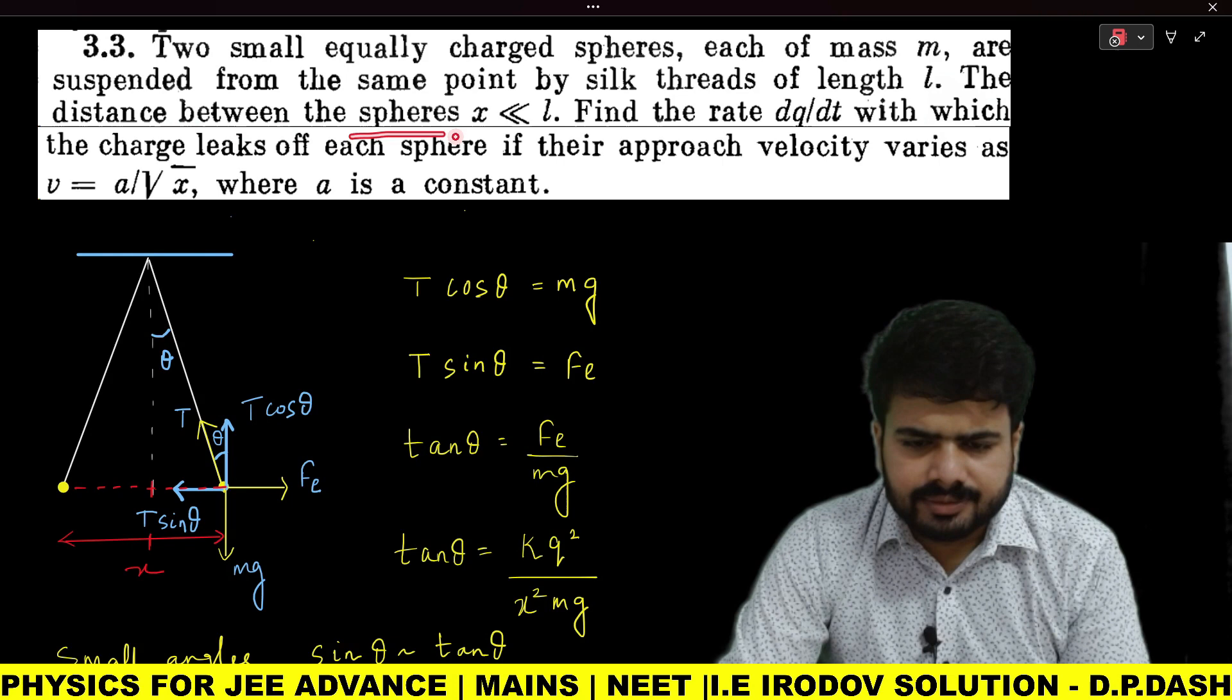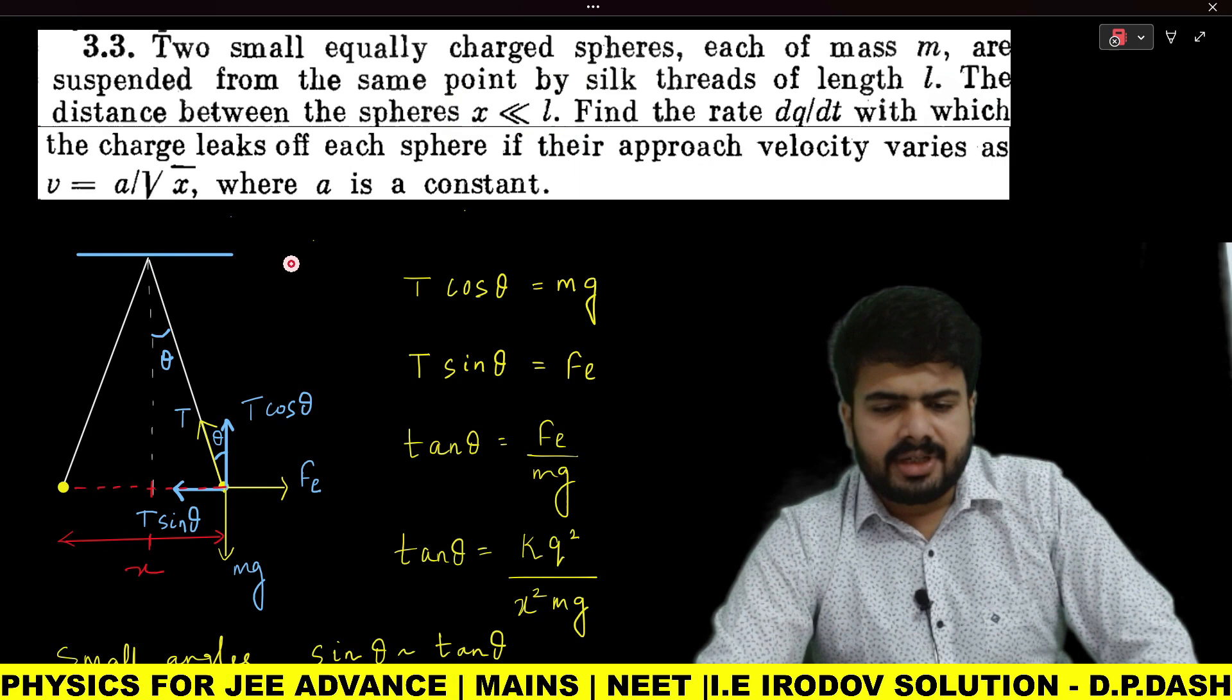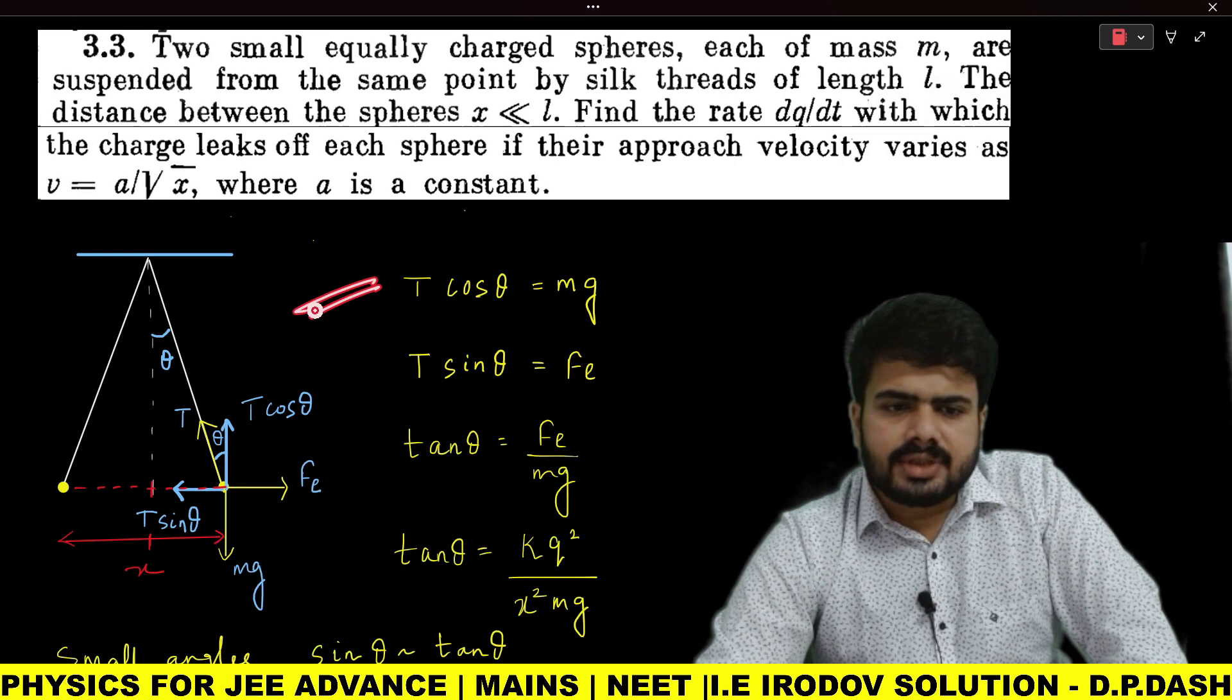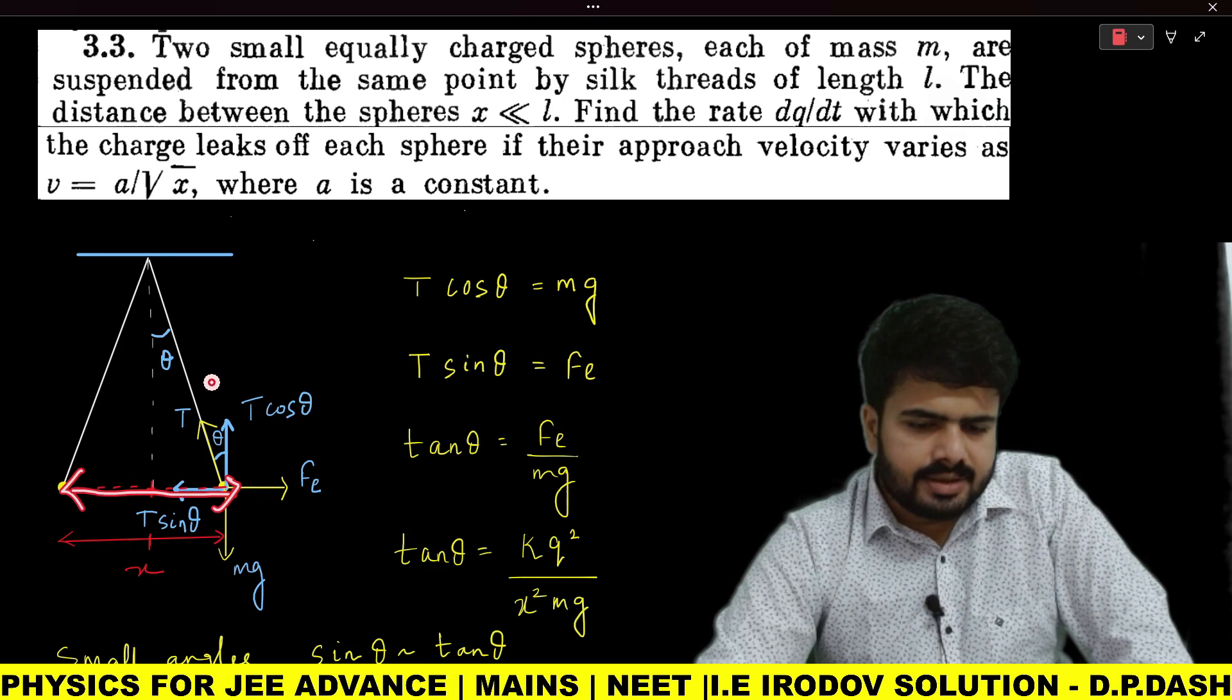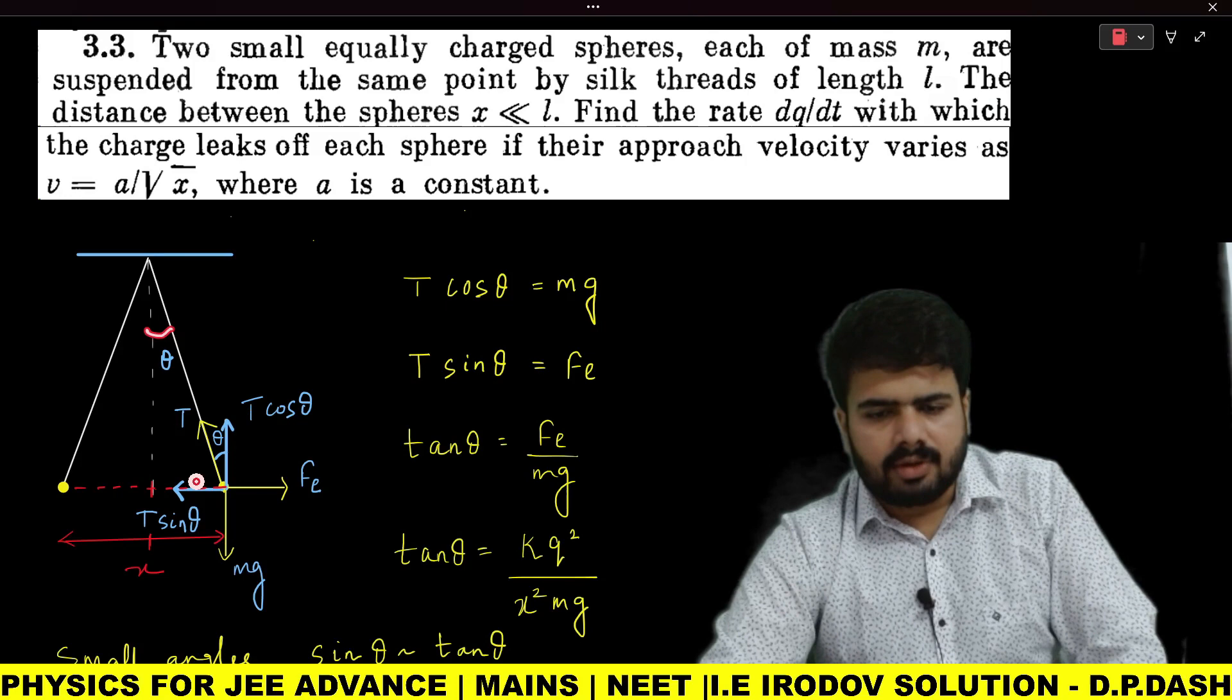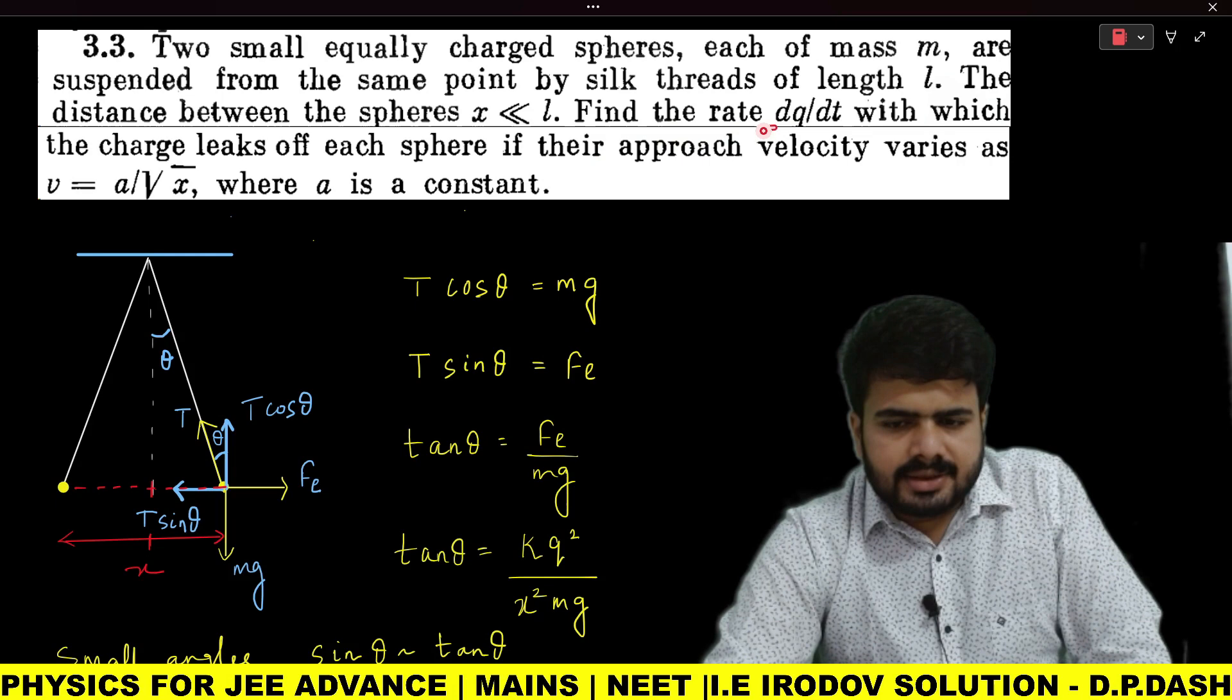The distance between the spheres is x, which is very much less than l. This statement is given to indicate that the angle θ forming here is a very small quantity. If you consider this distance to be very small in comparison to the length of that string, the angle θ will also be very small. Indirectly, x << l means that angle θ is very small.